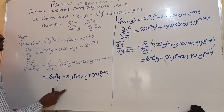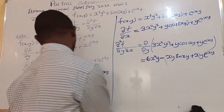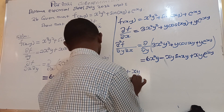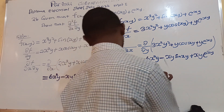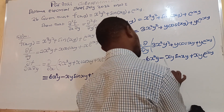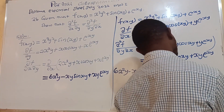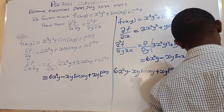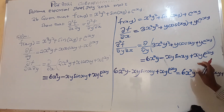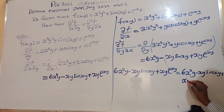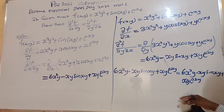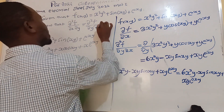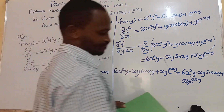Now we are told to check if both results are equal. We bring them together. The first result is: 6x squared y minus xy sine(xy) plus xy exponential xy. The second result is: 6x squared y minus xy sine(xy) plus xy exponential xy. The two sides are balancing, so we have managed to prove that. That question was eight marks.